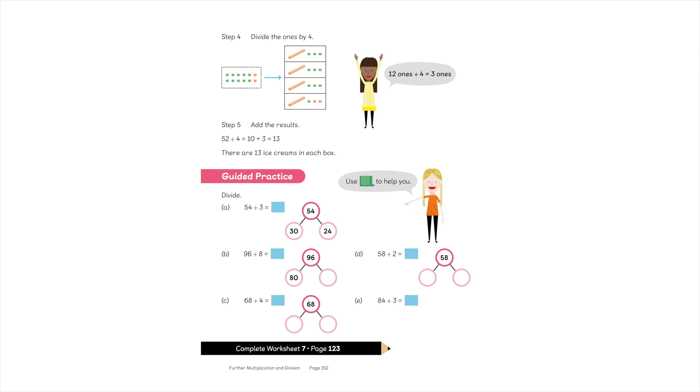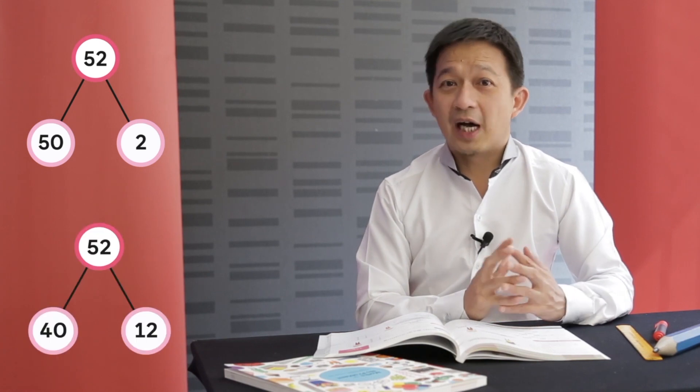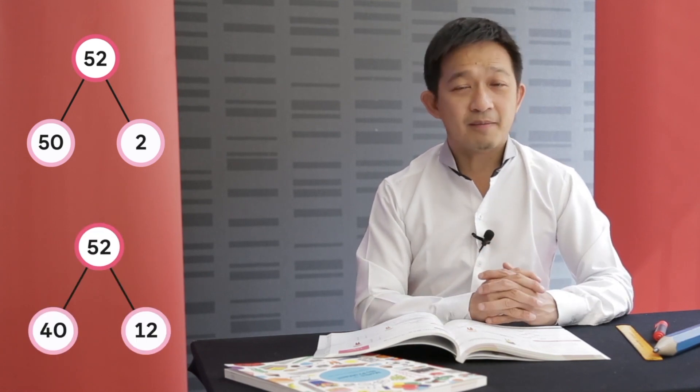Basically, we want to put students into three categories. The first: those who are beginning on the runway — they are not really able to do long division. But when you ask them, "Can you tell me, 52 is what and what?" they might tell you it's 50 and 2, or 40 and 12. So, are they able to divide using formal methods? No. But can they break numbers apart? Yes. Can they regroup? Yes.